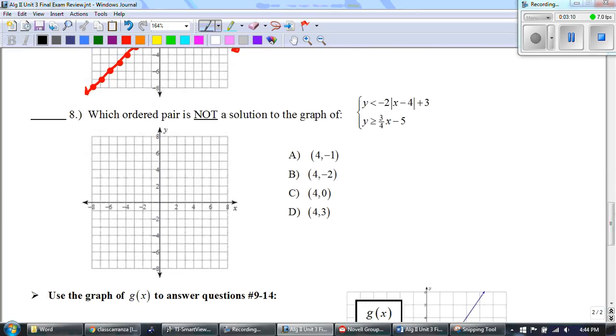Alright, number 8: which ordered pair is not a solution when graphed? My favorite. Once again, when I did this, I did it too fast and I got a couple wrong. Don't do the same thing, don't be like Mr. Grice. Alright, so our first absolute value inequality, it's going to be open and it's going to be below. And then it's being reflected because it's negative, and that's telling us that we have to go down two over one, and then my vertex is (4,3).